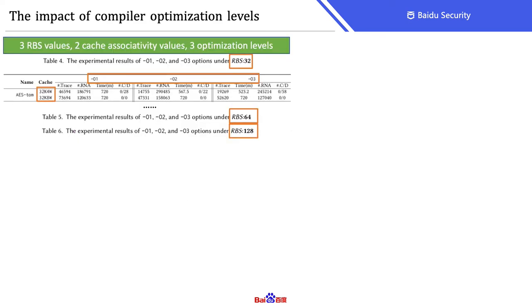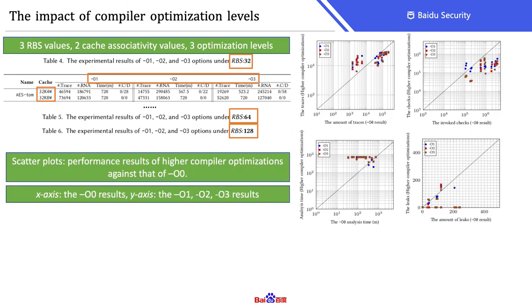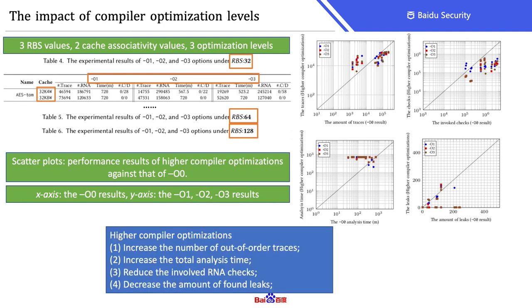The second experiment is to evaluate the impact of compiler optimization levels. We compare the results of O1, O2, and O3 against the result of O0. The four scatter plots visualize the comparison of the amount of traces, the invoked necessity analysis checks, the analysis time, and the amount of detected leaks. Each point above the diagonal line means a winning case of higher optimization, and points below the diagonal line represent winning cases of O0. From the scatter plots, we observe that higher compiler optimizations increase the number of out-of-order traces and total analysis time, reduce the involved necessity analysis checks, and most importantly, they decrease the amount of found leaks.